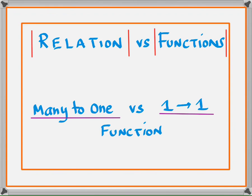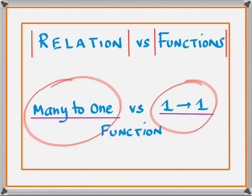When we talk about functions, it could be a many-to-one function or a one-to-one function. If one value of x gives one value of y, we call it a one-to-one function. If many values of x give one value of y, it's a many-to-one function. I have drawn vertical red lines when distinguishing between relation and function, and horizontal purple lines when differentiating between many-to-one versus one-to-one.